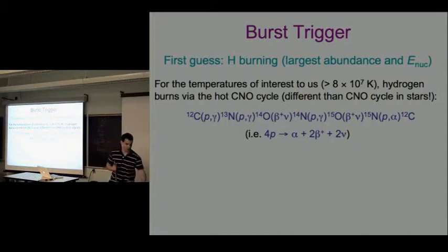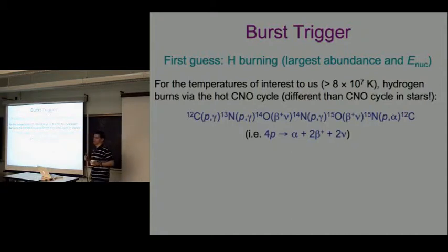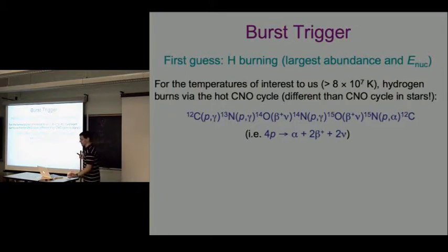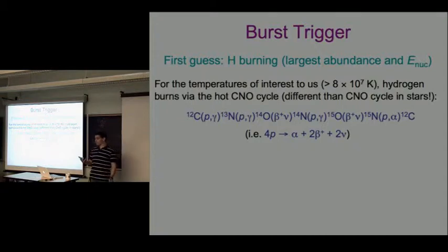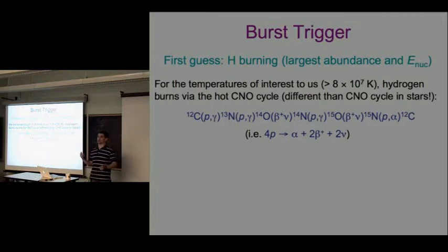We're thinking of accreted material from a star like the sun. The sun contains mostly hydrogen - about 70% by mass. Hydrogen is by far the most abundant, and hydrogen burning to iron-peak elements releases the most energy per baryon.